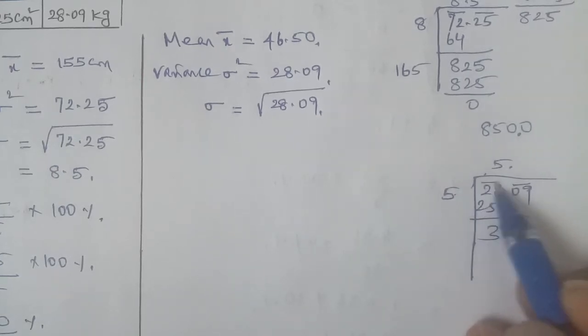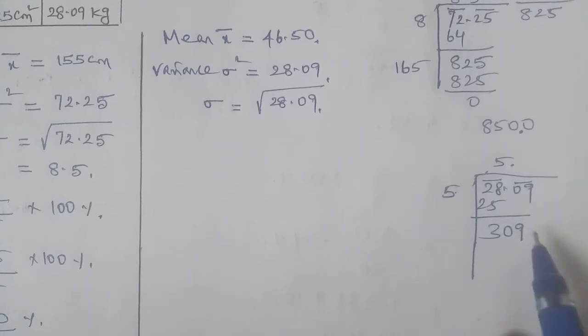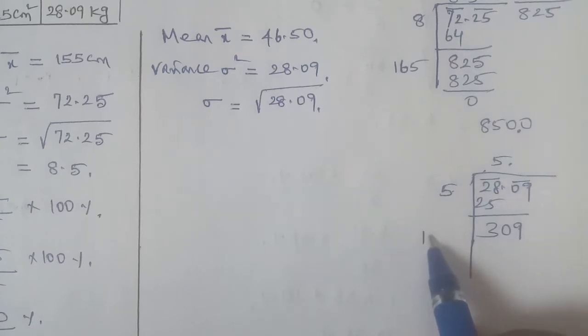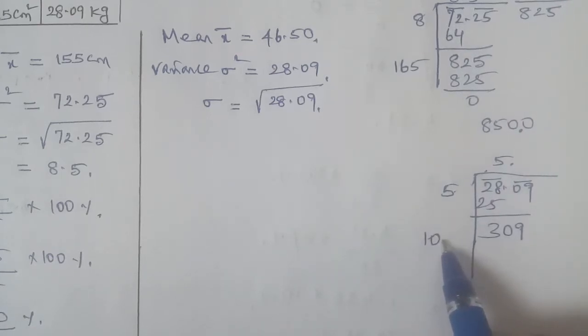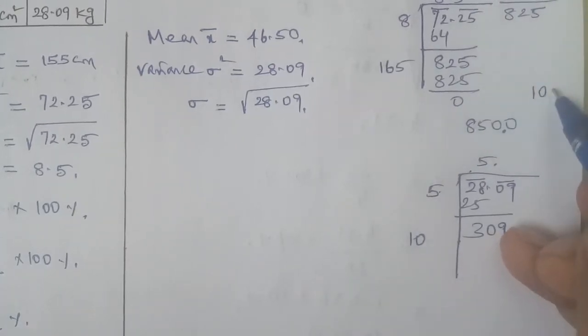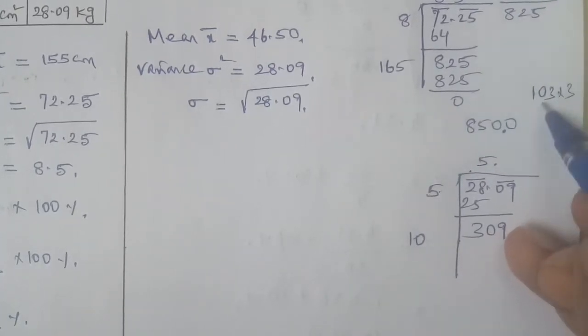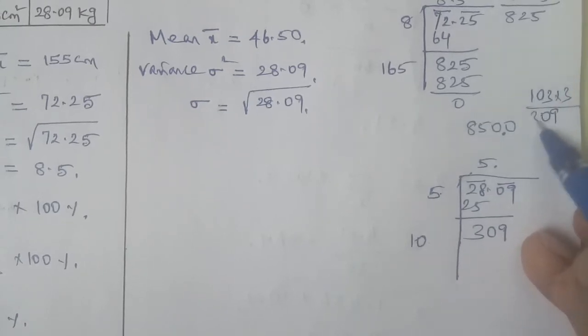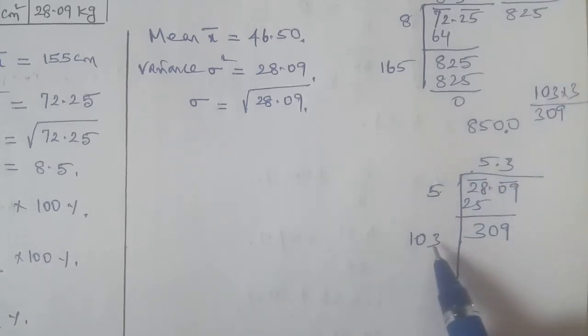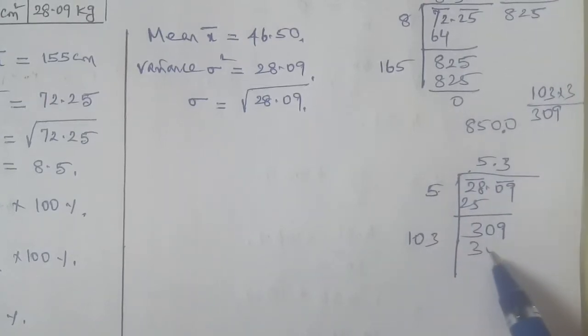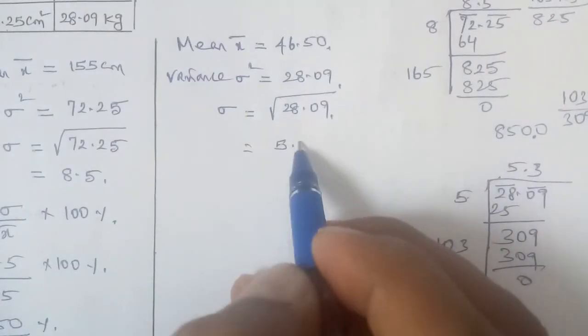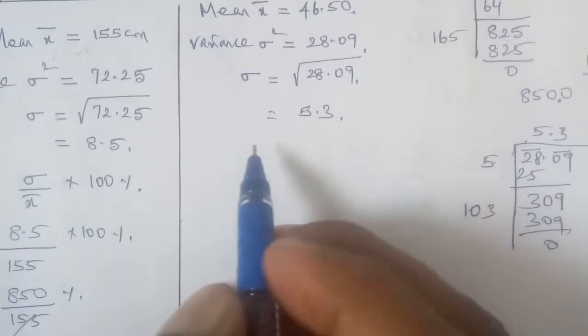Two numbers multiplied: 5 times 2 is 10. Three times 3 is 9. So, 309 exactly. Now 13 times 3 gives 39. Now 5.3. Coefficient of variation is equal to sigma divided by x bar into 100.